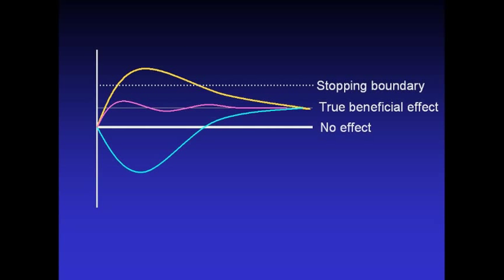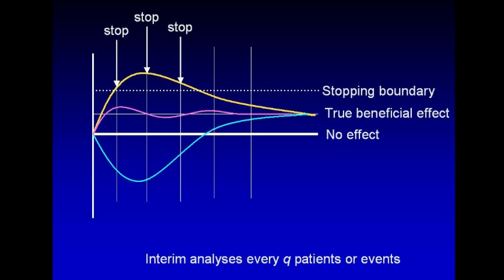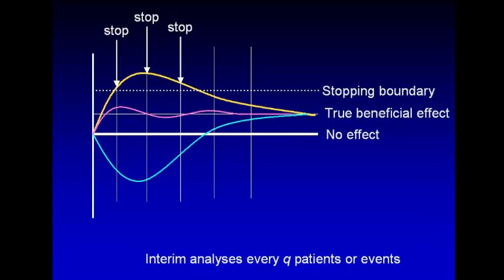Now let's assume we set a stopping boundary and we say, if we see a large effect, we are going to stop because this treatment is extremely beneficial. And what would happen if we looked after every event occurs or after every few patients are enrolled? Well many of those trials will cross the stopping boundary, particularly early on, and will generate large and misleading treatment effects.